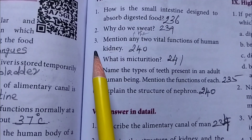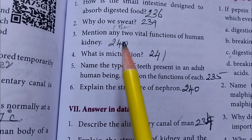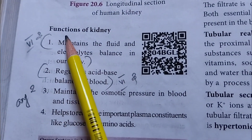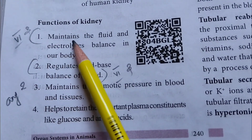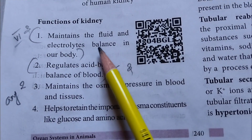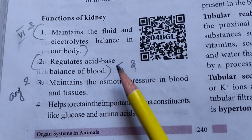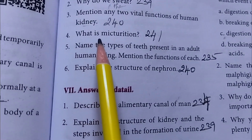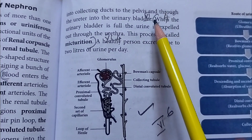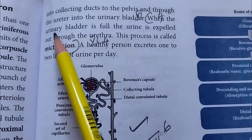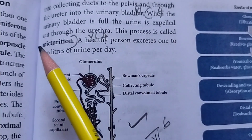3rd question: Mention any 2 vital functions of the human kidney. Functions of the kidney: 1st - maintaining the fluid and electrolyte balance in our body; 2nd - regulating the acid-base balance of blood. 4th question: What is micturition? When the urinary bladder is full, the urine is expelled out through the urethra. This process is called micturition.